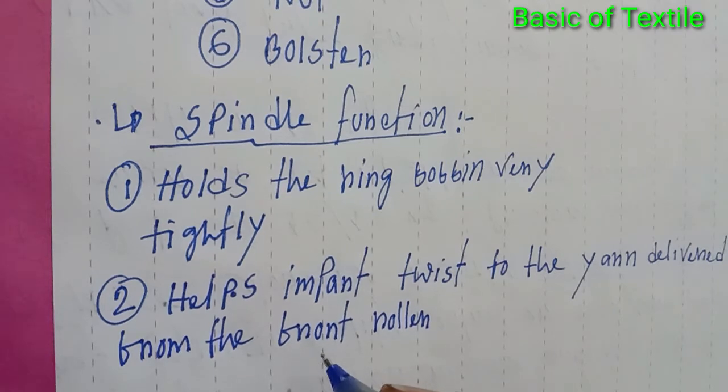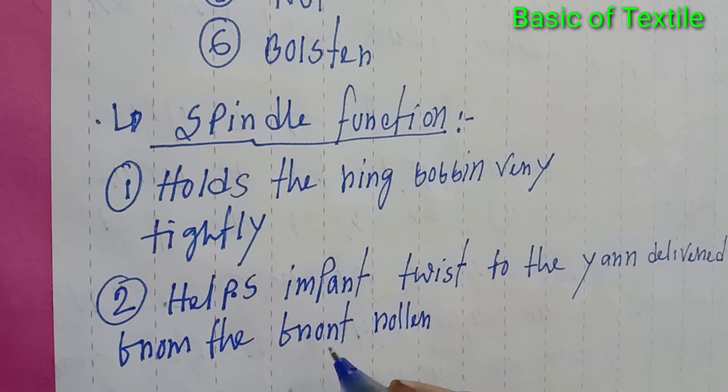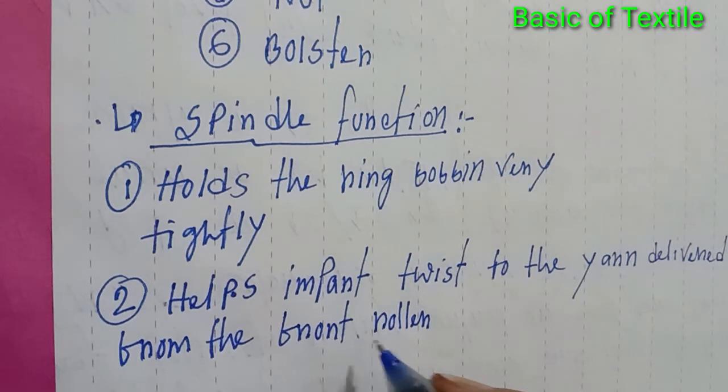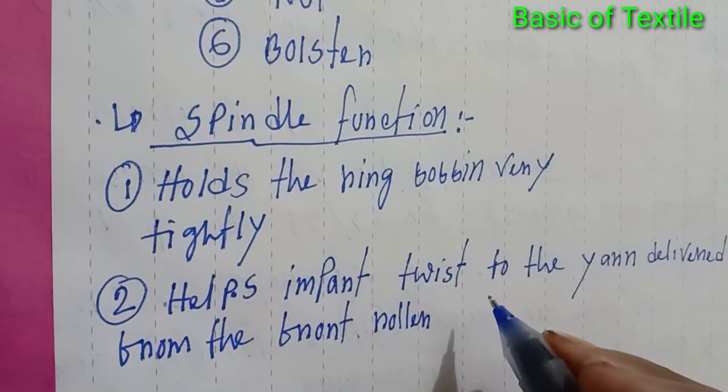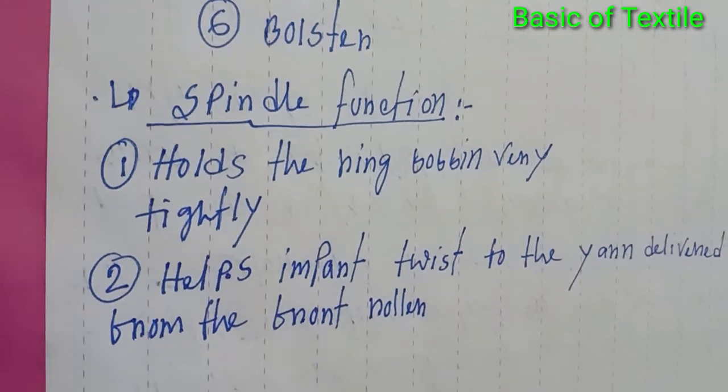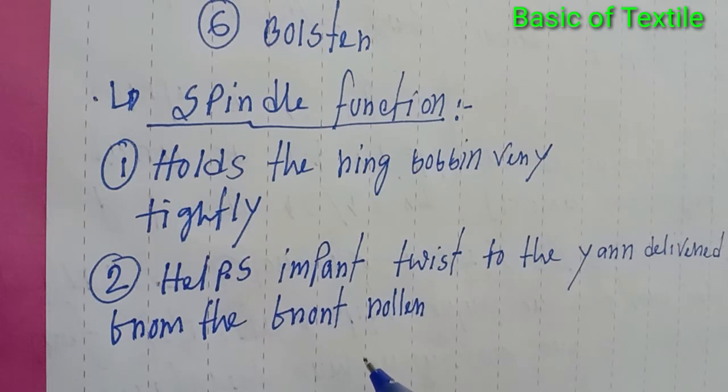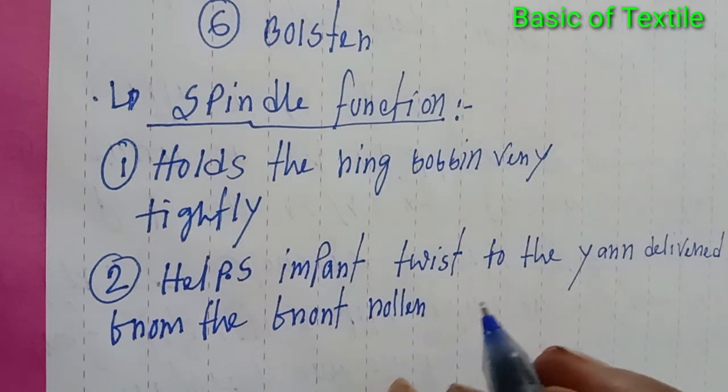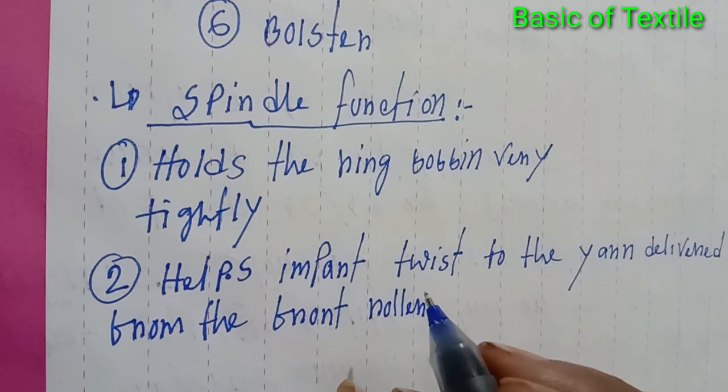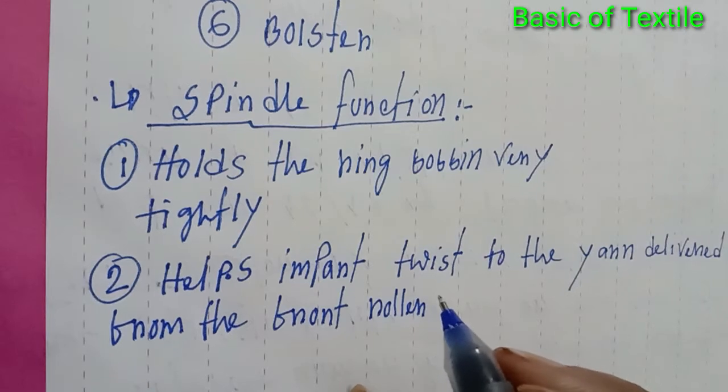That means, in the ring frame, the front roller delivers the product and the spindle helps impart twist to it.